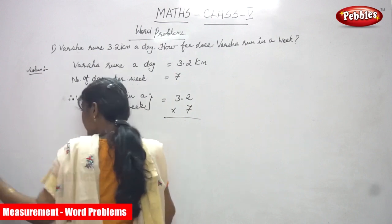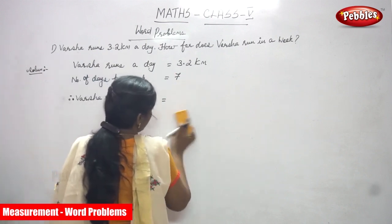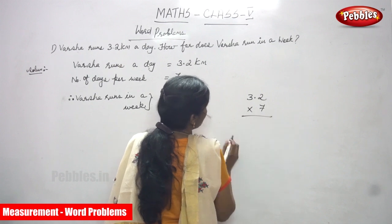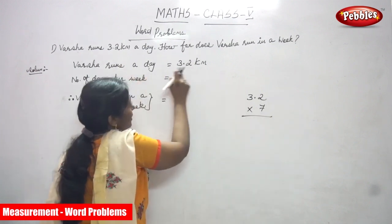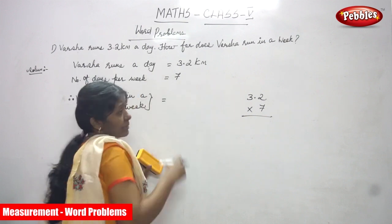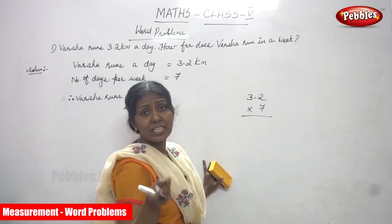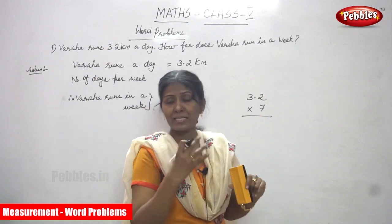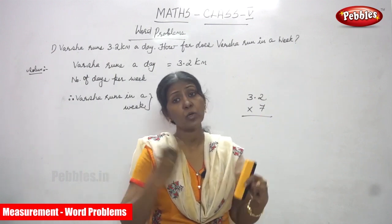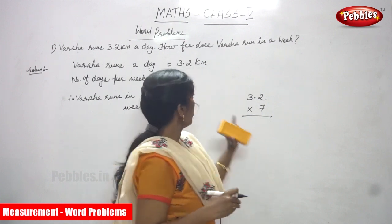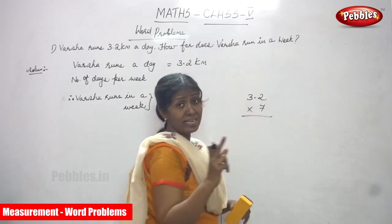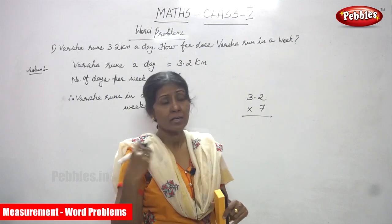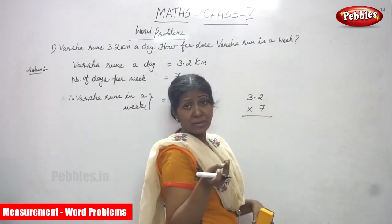So 3.2 into 7 — let me write it in the corner. Varsha runs every day 3.2 km, and the number of days per week is 7. They asked how many km she runs in a week, meaning in 7 days. One day's length is given and many days are asked, so it is multiplication: 3.2 into 7.